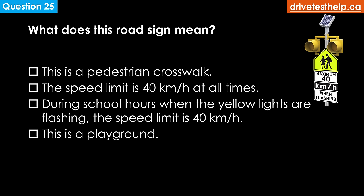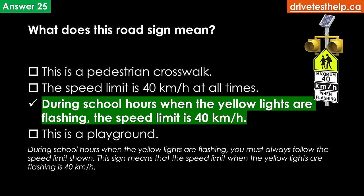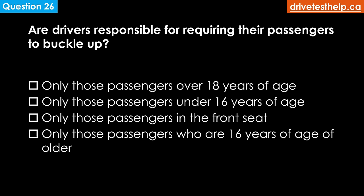What does this road sign mean? Options: this is a pedestrian crosswalk; the speed limit is 40 km/h at all times; during school hours when the yellow lights are flashing the speed limit is 40 km/h; this is a playground. The correct answer is: during school hours when the yellow lights are flashing, the speed limit is 40 kilometers an hour.